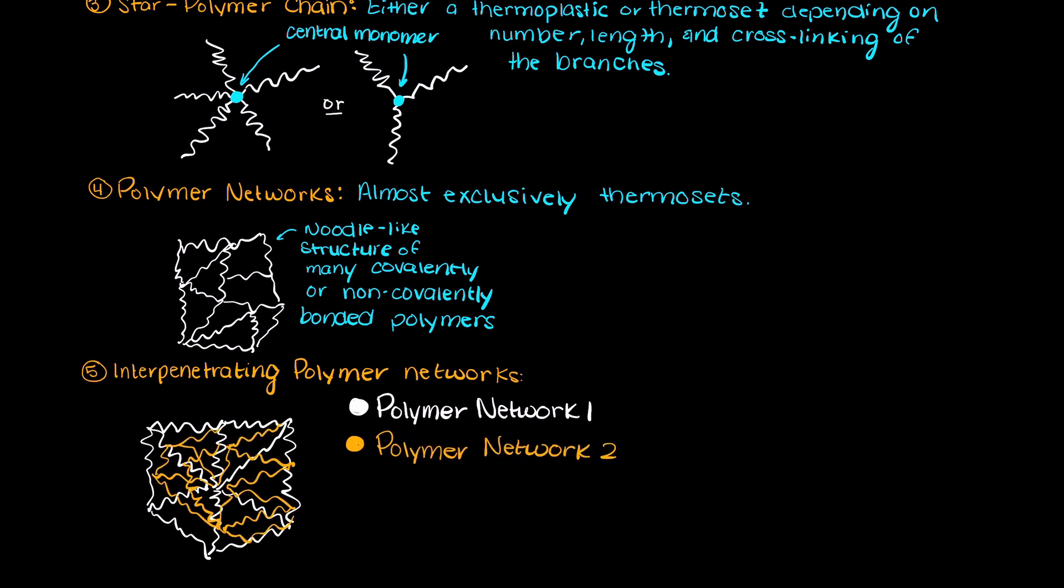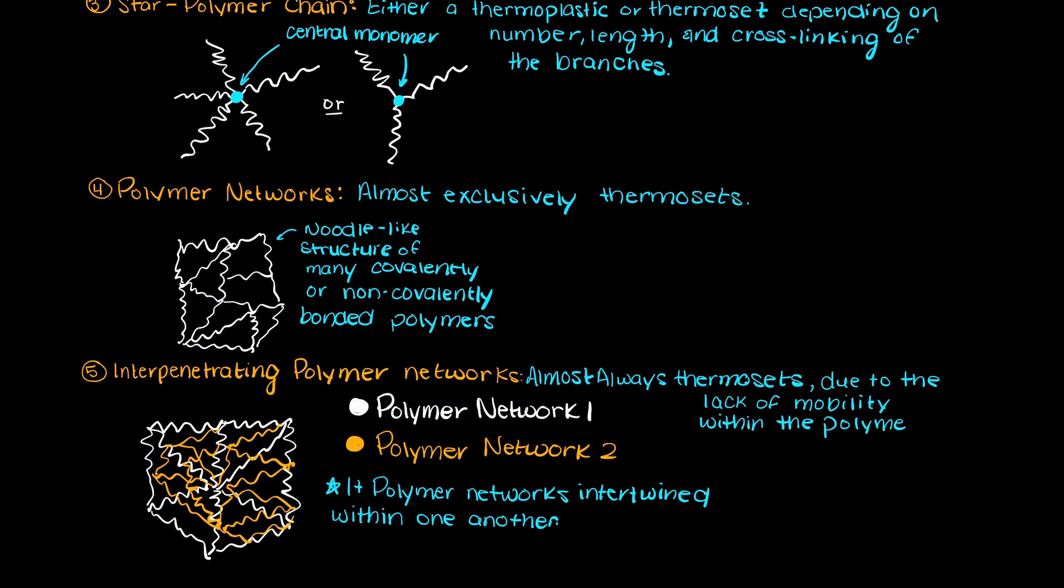So you can think of this like taking two polymer networks that I have drawn here and then they are intertwined and woven together. These again will almost always be thermosets due to how they are configured and the lack of mobility in the polymers.